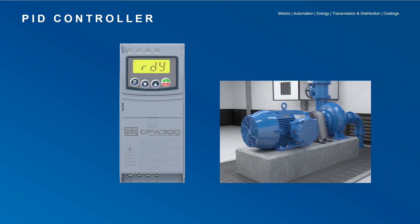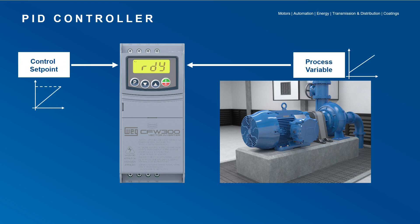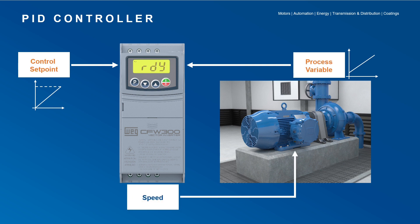The PID controller application can be used to control a closed-loop process, which basically compares the control setpoint — the desired value — with the process variable acting on the motor rotation, with the aim of eliminating any difference between these variables. In the CFW300, this function is associated to the built-in PLC called soft PLC, and for this it needs a specific programming.